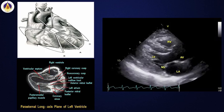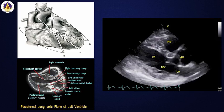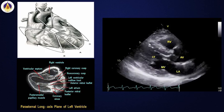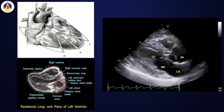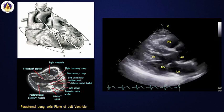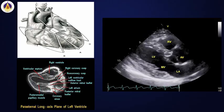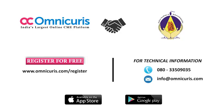Historically, the left atrium was one of the first chambers to be identified by M-mode echocardiography and by 2D echocardiography, and studied clearly and described.